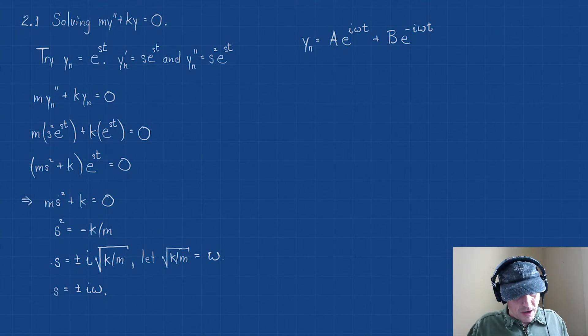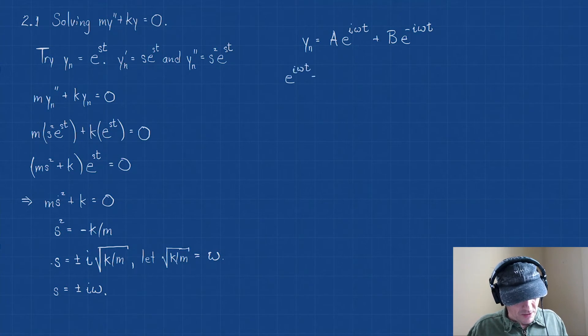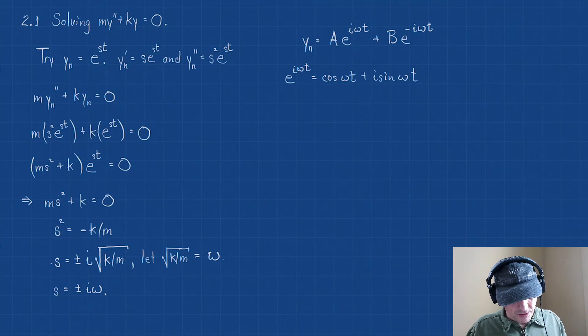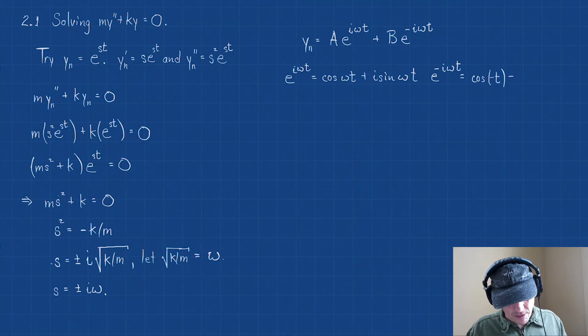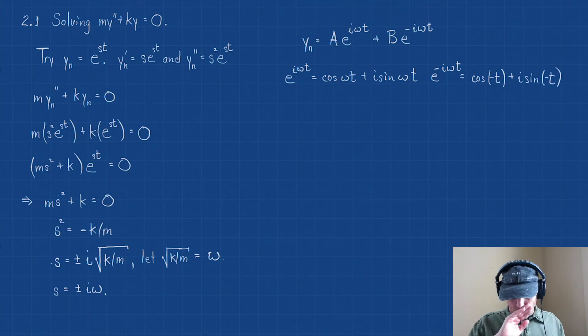So let's try this. We need to expand this. Well, we know this. Remember that e^(iωt), well, this is cos(ωt) + i·sin(ωt). And you might also recall that e^(-iωt), that becomes cos(-ωt) + i·sin(-ωt).